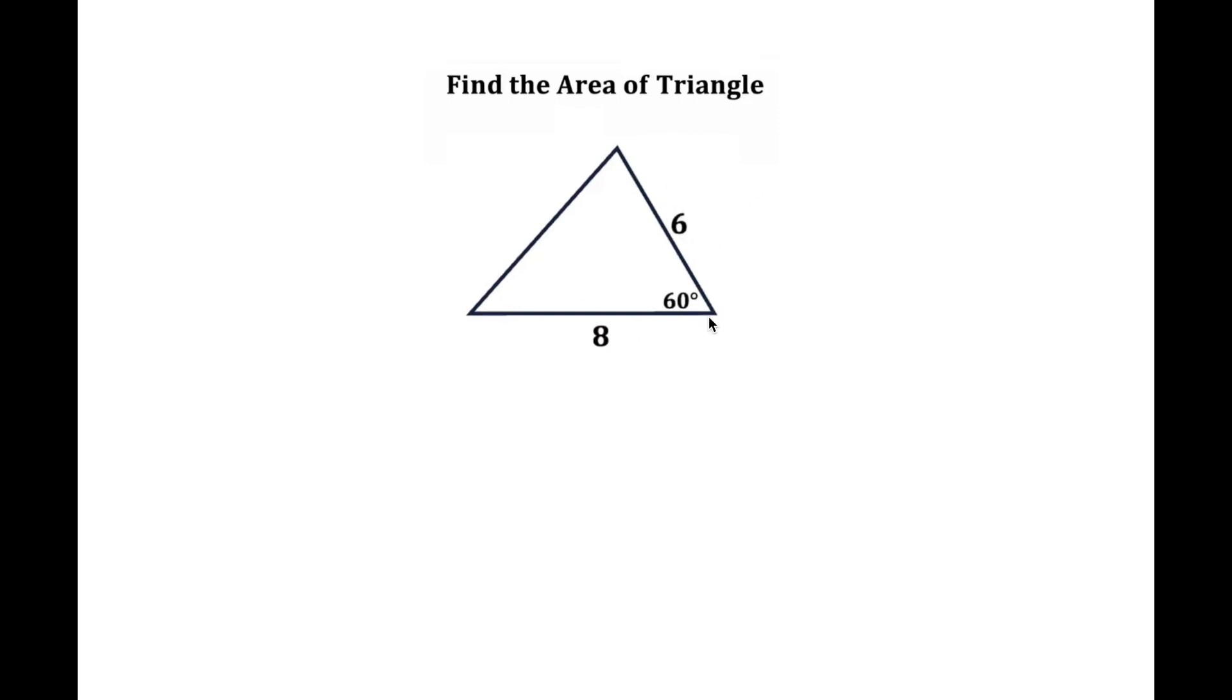So what we're given is that this side length right here is equal to 8, this side length right here is equal to 6, and this angle right here is 60 degrees. So using these given values, I need to find the area of the triangle.